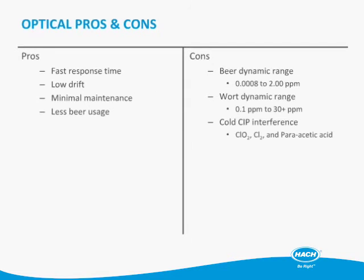The pros of an optical sensor are fast response time, low drift, and minimal maintenance. You use less beer because if you forget and walk away, you're not running a lot of beer to the floor. The cons are that probes must be tuned for different dynamic ranges — a typical low probe is about 1 ppb up to 2 ppm, and a wort probe has a dynamic range of roughly 0.1 ppm to 30+ ppm. The only CIP concern is that chlorinated products, peracetic acid, and a few other things can react and quench the fluorescent material, but if you turn sensors off and are careful during CIP, it shouldn't cause interference problems overall.